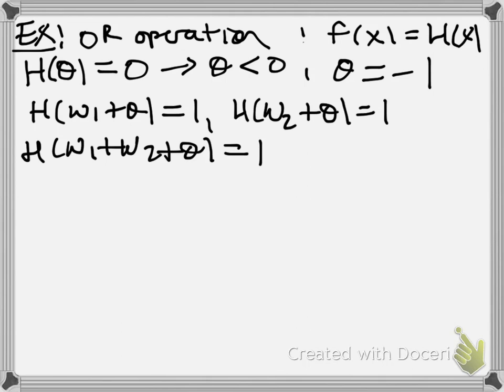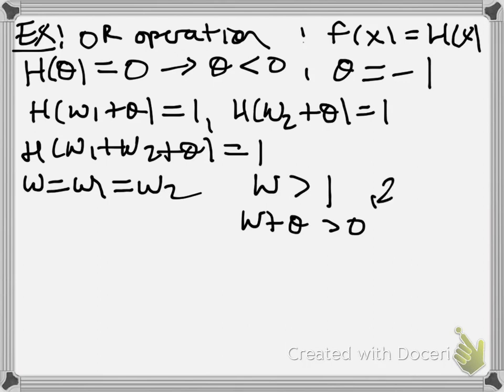So, how do we set up our perceptron so that all of these restrictions are satisfied? Well, because again, because there's this symmetry in these conditions, you could exchange x1 and x2 and all the conditions would be the same. We can assume that w1 and w2 can just be the same in this case. So, we just need a w that's just greater than 1, so that when we add it to theta, we'll have w plus theta is greater than 0. Moreover, we need that 2w plus theta is greater than 0, but that would follow from this condition.